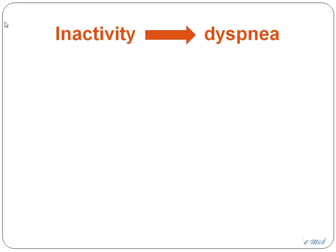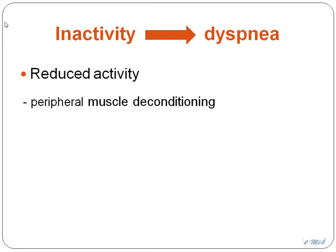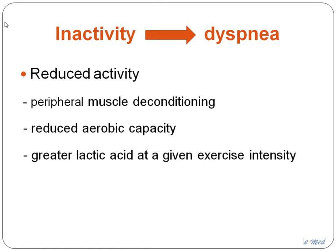We now understand that although dyspnea leads to inactivity, this is a two-way street — inactivity also leads to dyspnea. Reduced activity gives rise to profound peripheral muscle deconditioning. The consequence is a reduction in aerobic capacity, which means greater reliance on anaerobic energy systems early in exercise. Patients produce lactic acid unusually early and in unusually large amounts at any given exercise intensity. Lactic acid is a potent ventilatory stimulant — it increases CO2 production and the hydrogen ions drive your chemoreceptors — resulting in a lot of ventilation and no capacity to deal with it, perceived as dyspnea.